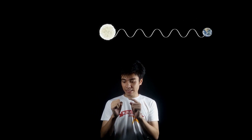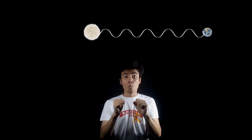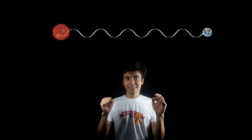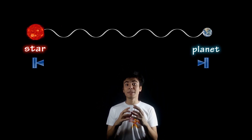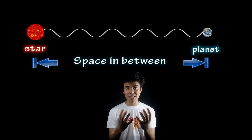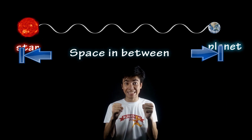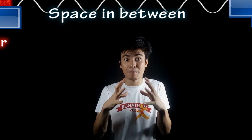The star's wavelength was rising, and that's why it was converted to red. So that means the star, the planet, and the space around it — everything was rising and expanding.